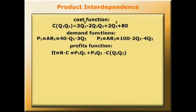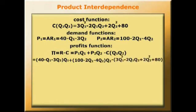So here in our case, given our cost conditions and demand functions, we've got (40 - Q1 - 3Q2)Q1, that's the revenue from market 1, plus (100 - 2Q1 - 4Q2)Q2, that's the revenue from market 2, minus the costs: 3Q1² - 2Q1Q2 + 2Q2² + 80. That's the amount of profit we're going to make.